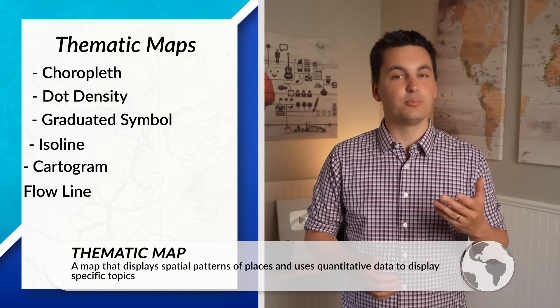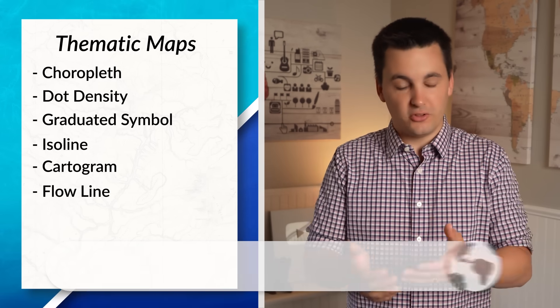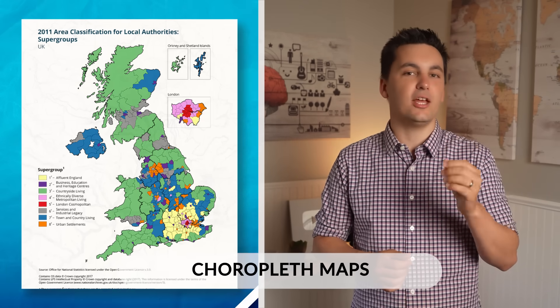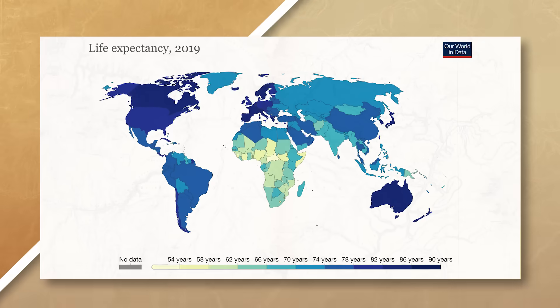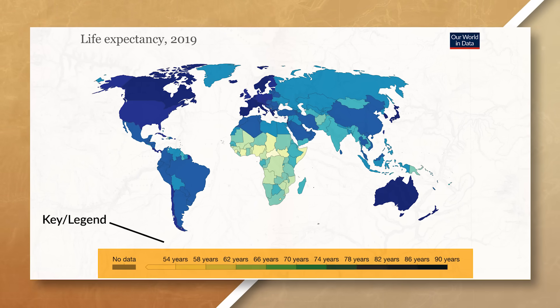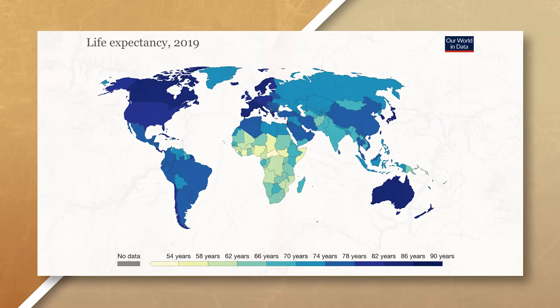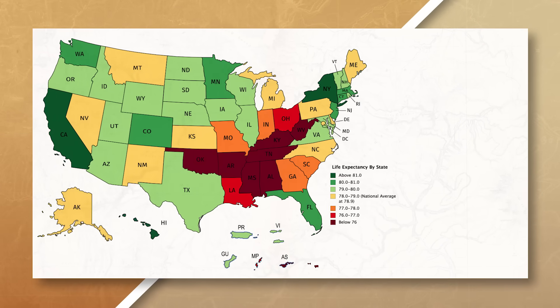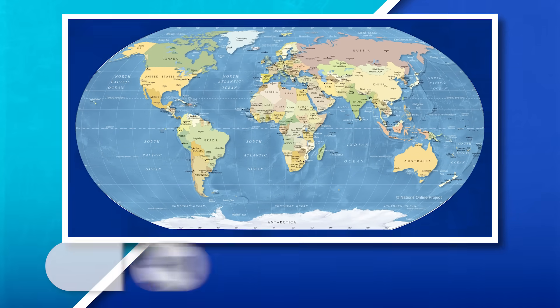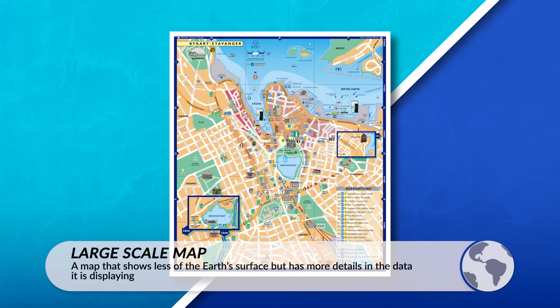Thematic maps, on the other hand, display spatial patterns of places and use quantitative data to display specific topics. These maps present the reader with specific information that can tell a story about an area. Choropleth maps display data by using different colors — these maps are great at showing quantity and density, but use generalizations to display the information. For example, when looking at this choropleth map, we can see the average life expectancy for each country around the world; the darker the color, the longer people in the country are living. One problem is the use of generalizations — for instance, if we change the scale, we can see that each state in the US has a different average life expectancy. Small scale maps have to use more generalities since they're showing more of the Earth's surface, while large scale maps can use more specific data since they're showing less of the Earth's surface.